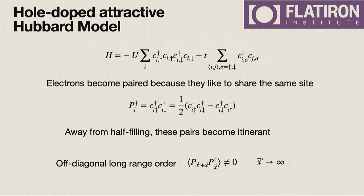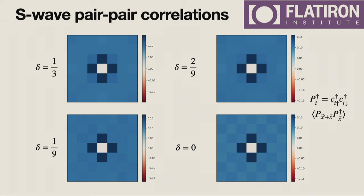When electrons share a site they form a singlet state, and when one hops away they stay in this singlet state. We can look for off-diagonal long-range order: if you create a Cooper pair at a site and destroy it infinitely far away, you expect the expectation value to stay finite as you move these Cooper pairs as far apart as possible. This is associated with breaking of particle number symmetry locally, which is the hallmark signature of a superconducting state.